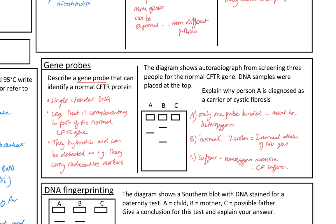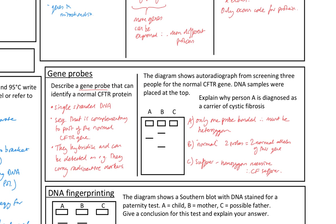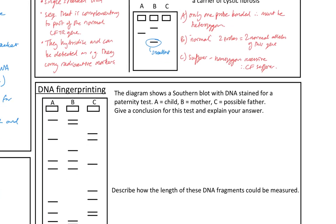You can do that either way. You can either screen for the defective allele or you can screen for the normal allele. It depends what you're doing. They're also going to ask things like, you know, circle the smallest fragment. The smallest fragment moves the furthest. The wells are at the top. So that's our smallest fragment.